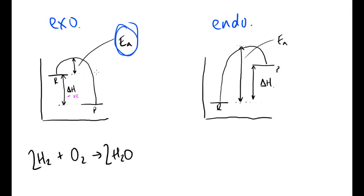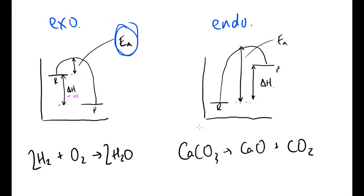For an endothermic reaction, a good example is the thermal decomposition of calcium carbonate into calcium oxide and carbon dioxide. You have to heat the calcium carbonate strongly before it breaks down. The activation energy here is the entire heating process, and the ΔH for this endothermic reaction is of course positive.